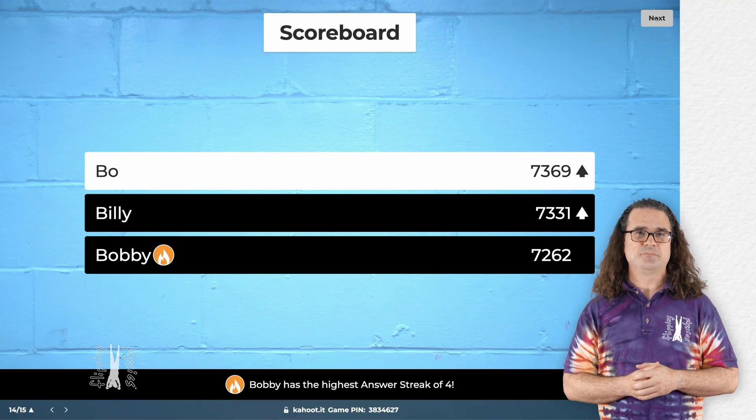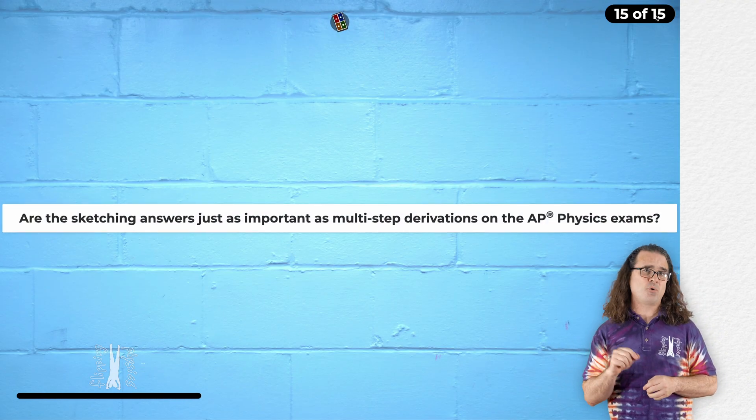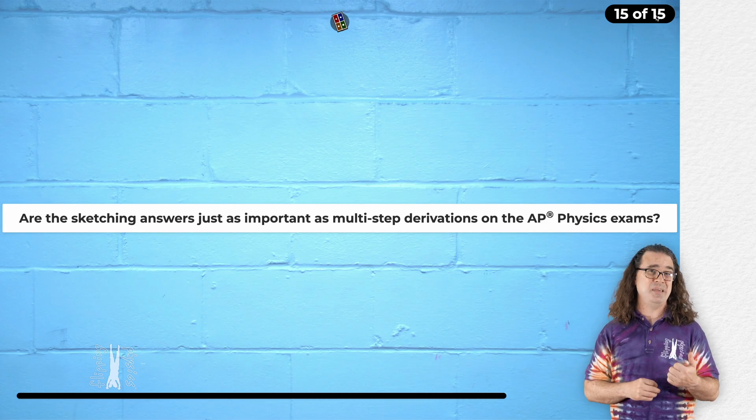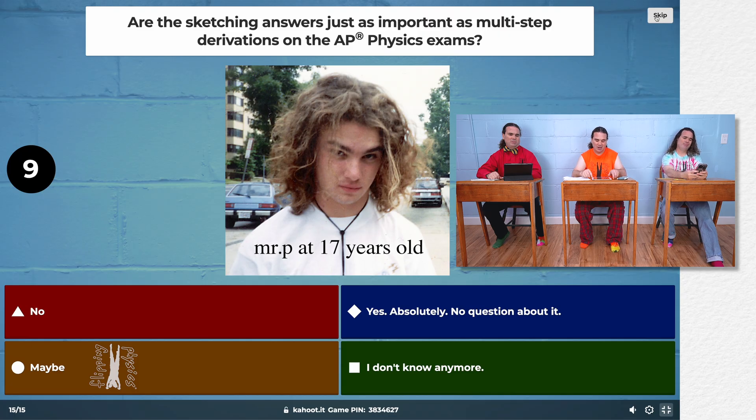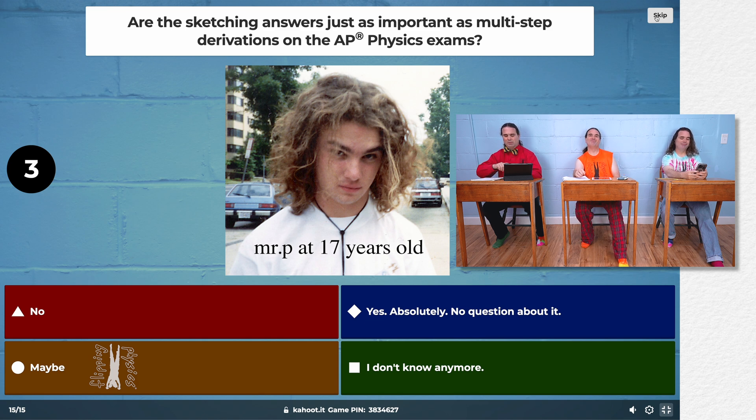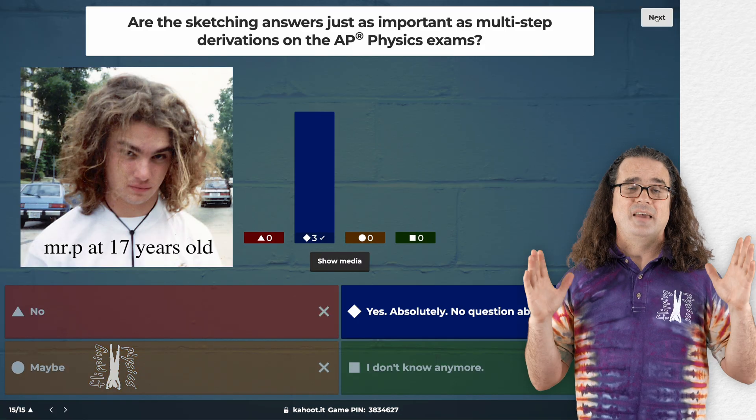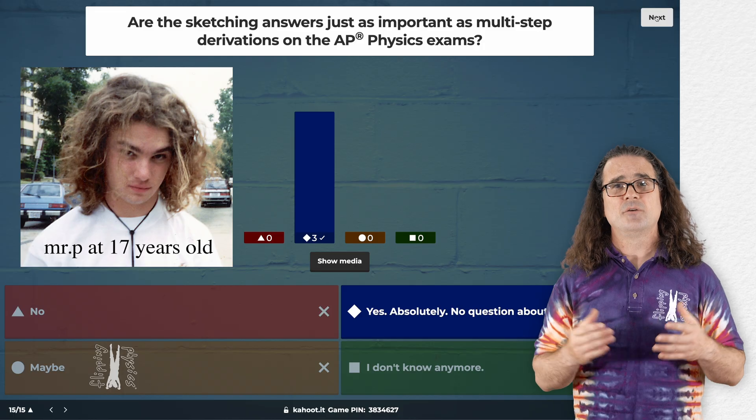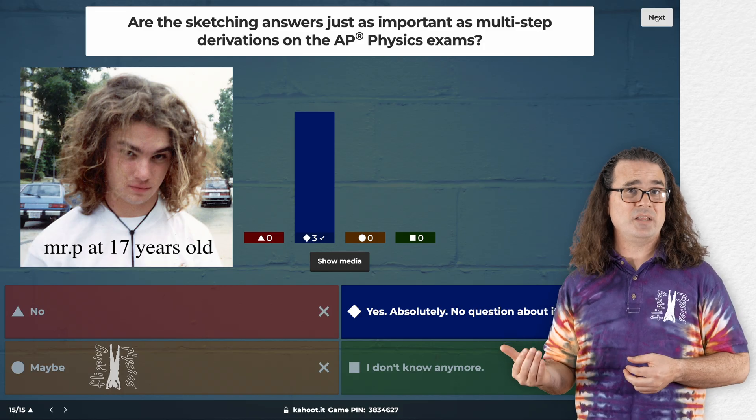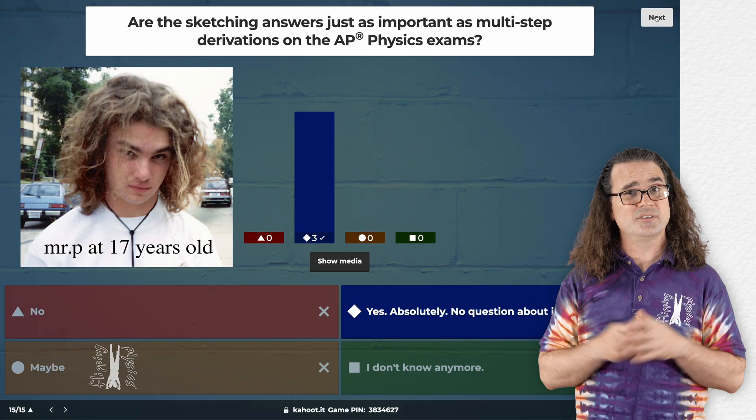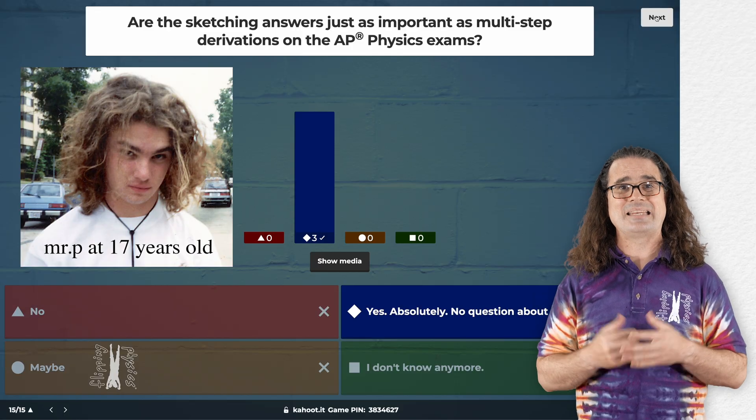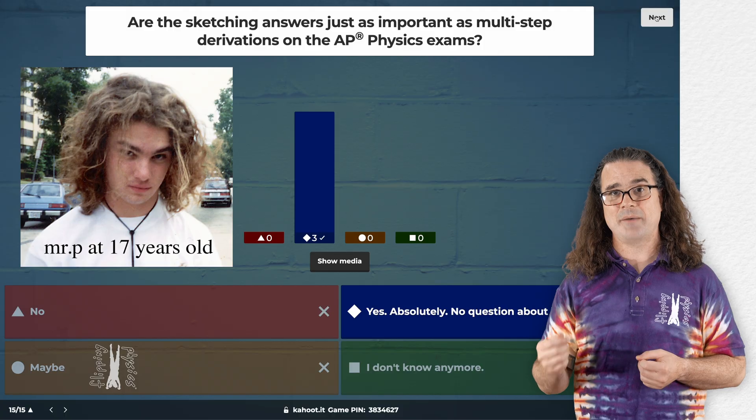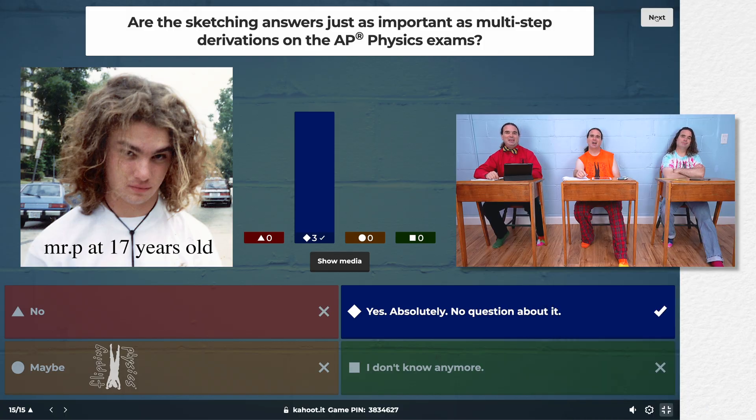And now the last question. Are the sketching answers just as important as multiple-step derivations on the AP physics exams? Yes, absolutely no question about it. Please realize that while sketches may seem relatively unimportant because they are just drawings, your sketches are definitely important and can be worth as many points as a multiple-step derivation. Hey, Bo, you look just like Mr. P when he was 17 years old. That's pretty cool. Sure. Yeah. That's weird. Why? Why do you think? I don't know.